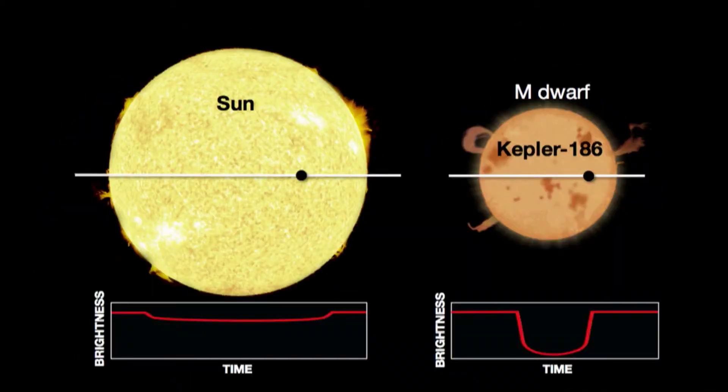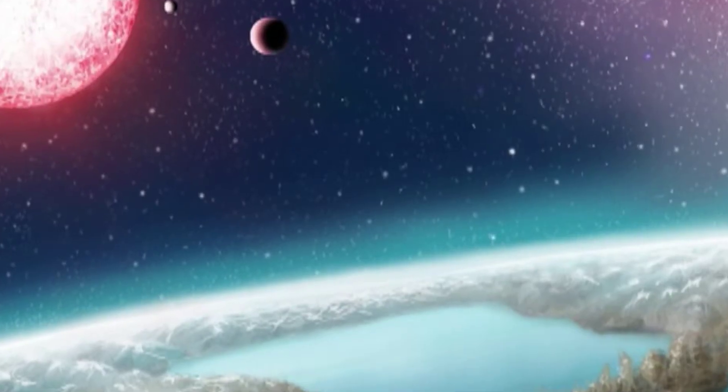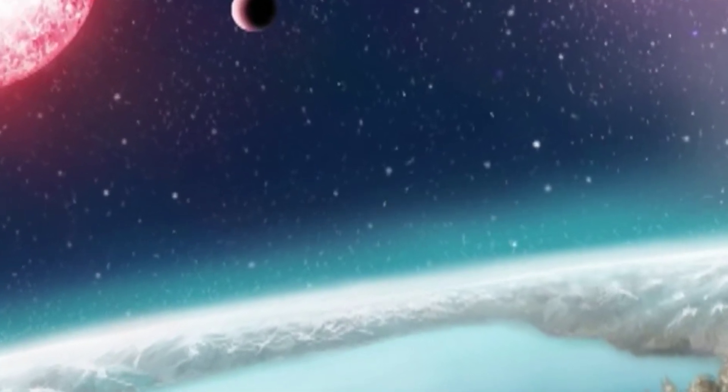Our sun is brighter than the star that Kepner 186F orbits around. This means it is not as bright on Kepner 186F as it is on Earth. At noon on Kepner 186F, it will be the same brightness as a sunset on Earth.